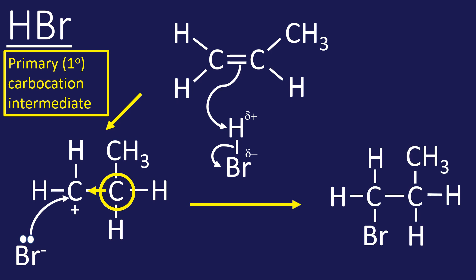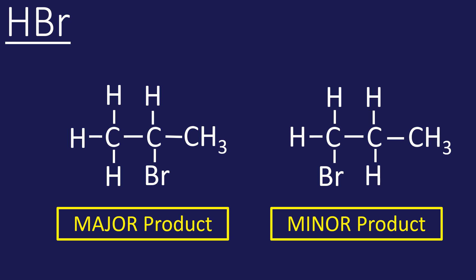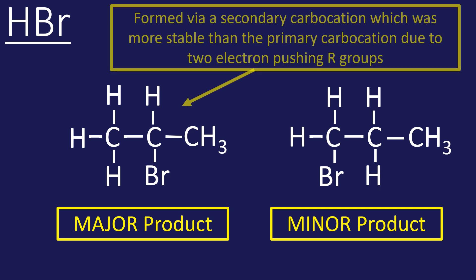That would give rise to this product. These are our two possible products. The one on the left is classed as the major product because that one formed via a secondary carbocation that was more stable than the primary due to two electron pushing R groups.